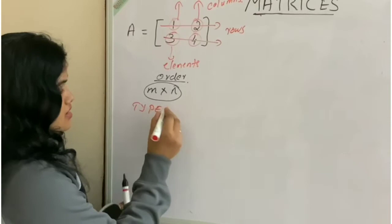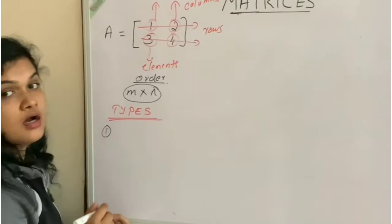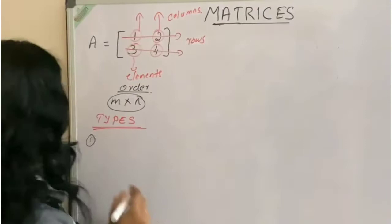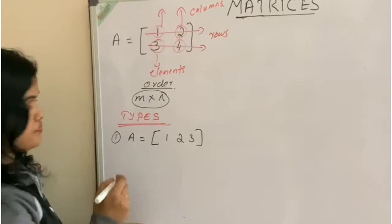Then, next category is types of matrices. First type is row matrix. Row matrix is a matrix which has only one row. This is an example.